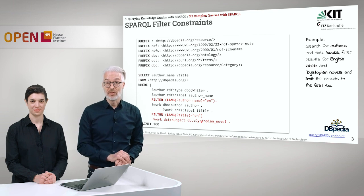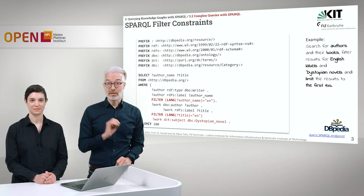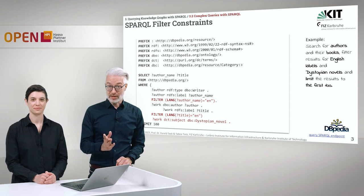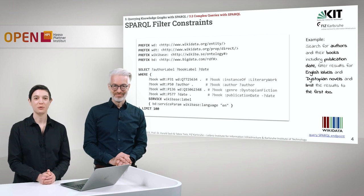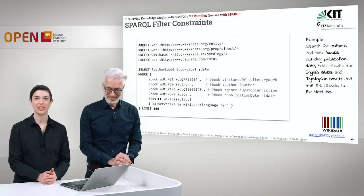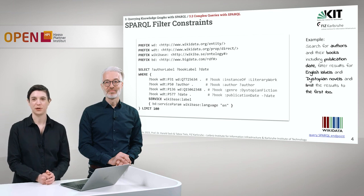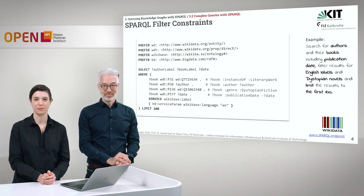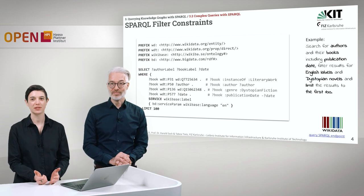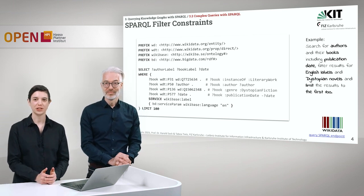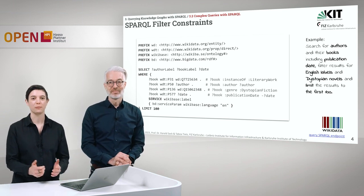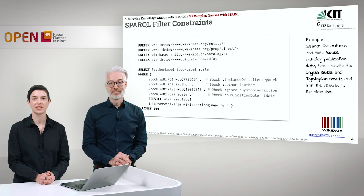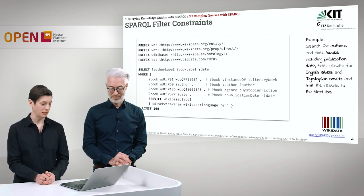Today we want to show you another knowledge base: Wikidata. Let's take a look at how we can filter for language in Wikidata. We have a query prepared. Here we want to search for authors and their books, including a publication date. We want to filter the results for English labels, query dystopian novels, and limit the results to the first 100.